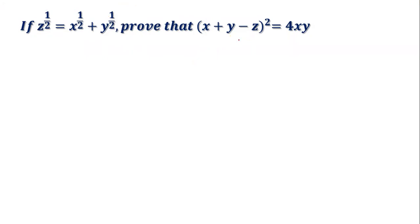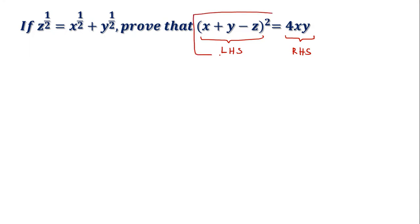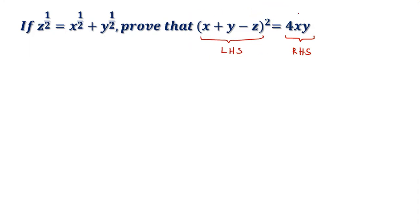This is the proving part. We have two sides here — the left hand side and the right hand side. I normally advise my students to choose the more complex side to start from. Looking at this, the left hand side looks more complex, so I'm going to start with the left hand side and prove it equals the right hand side. Notice the right hand side only has x and y — there's no z there.